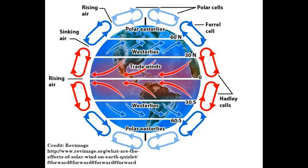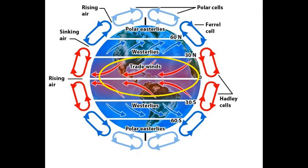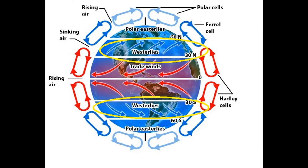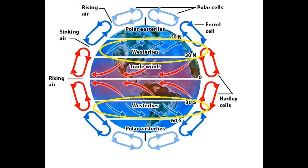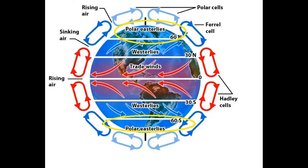There are three atmospheric convection areas that influence the climate regions on earth. First, the tropical region begins at the equator and extends to about 30 degrees latitude. Next, the temperate region extends from there to about 60 degrees latitude. Lastly, the polar region extends from there to the north pole, 90 degrees latitude.